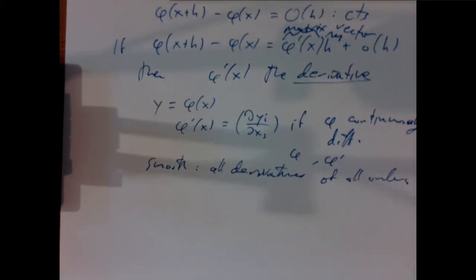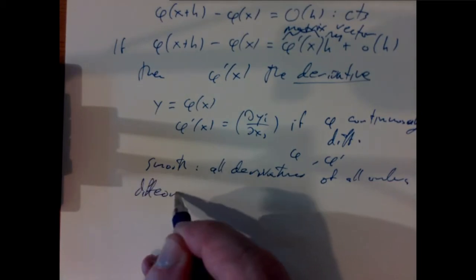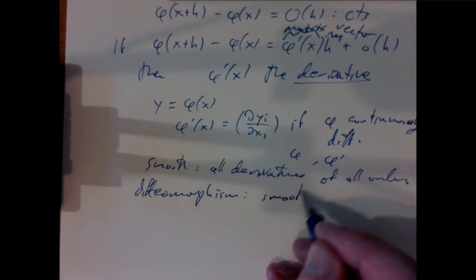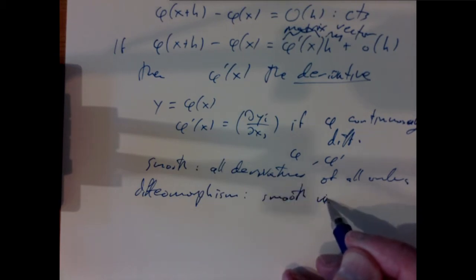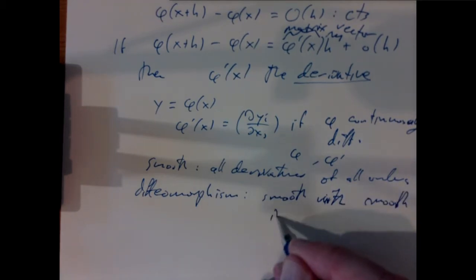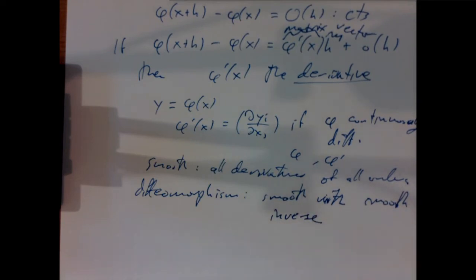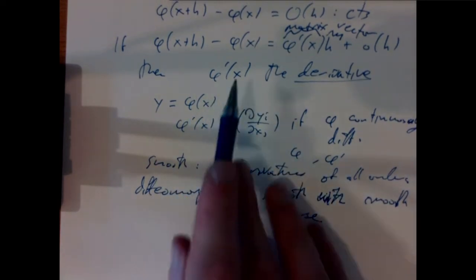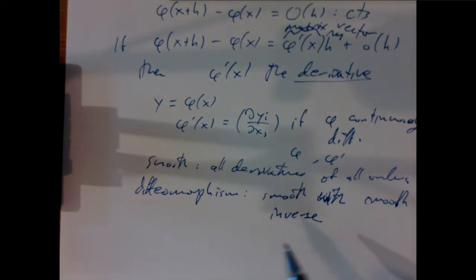A diffeomorphism means a smooth map with a smooth inverse. Some people use a different notation for derivatives, maybe a capital D instead of a prime symbol for a derivative of a map of several variables. The notation isn't too important.